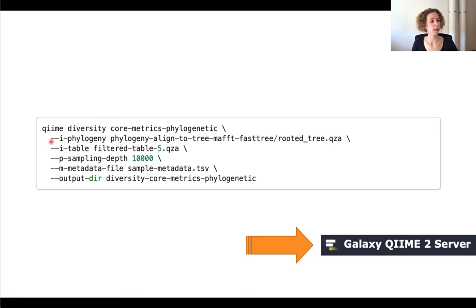And we only have to do is specify the input phylogeny, so that's your rooted tree, specify an input table, that's the feature table we get from clustering, we add a sampling depth that we get from looking at the rarefaction tables, pass the metadata file, and then we only have to specify an output directory. So it's very simple actually, and I'm going to show you this in the QIIME2 Galaxy server because I can also show you some nice visualizations there.